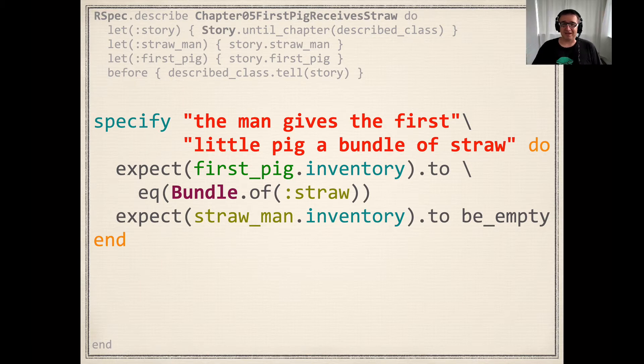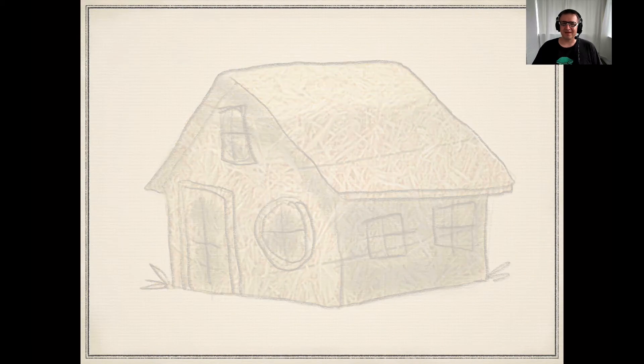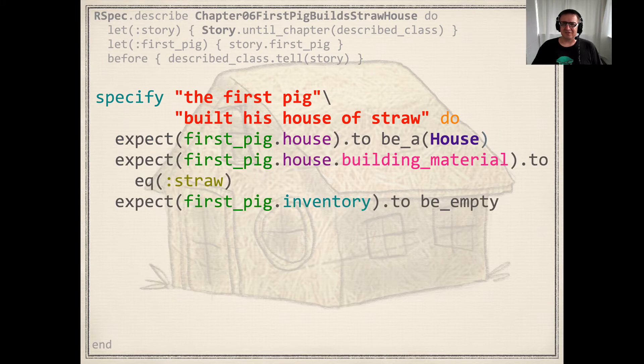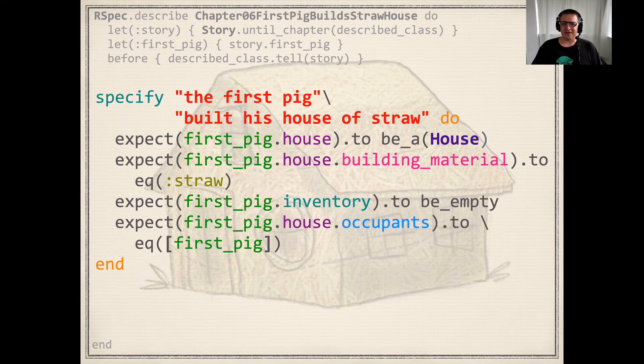The man gave the first pig his straw, and set off on his way. And the first little pig used all the straw the man had given him to build himself a house. I'll be warm and cosy inside, he said.